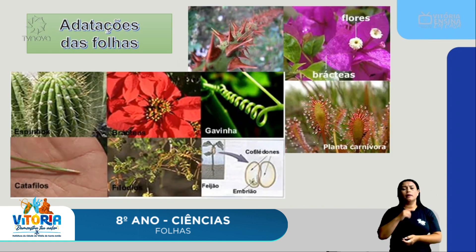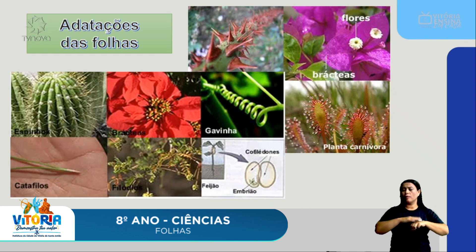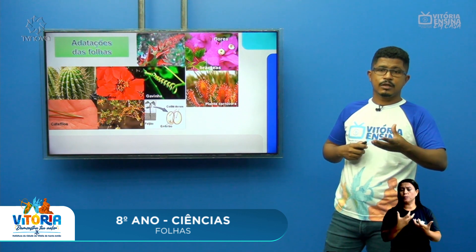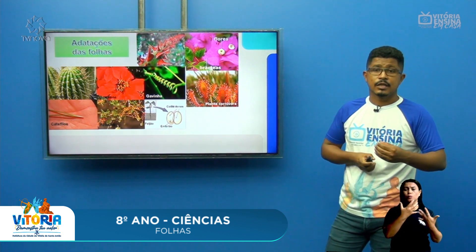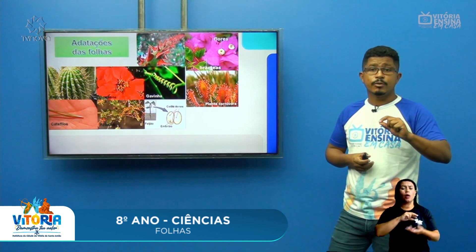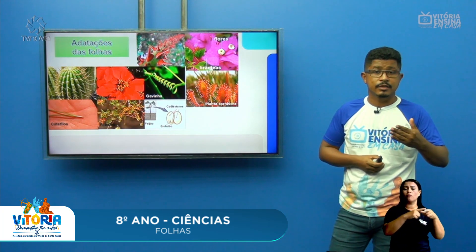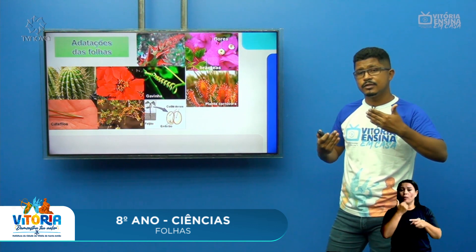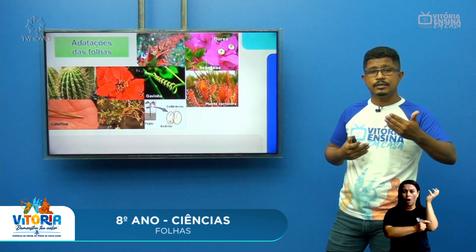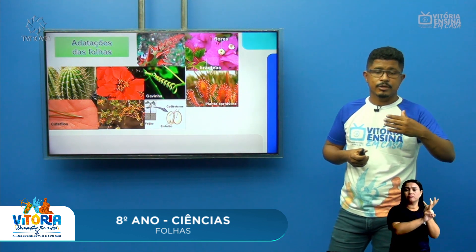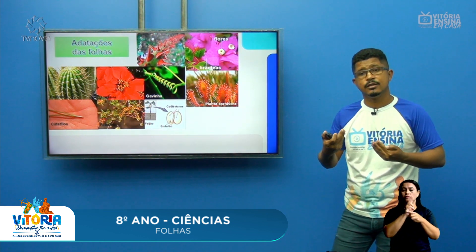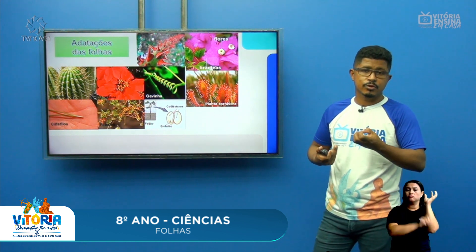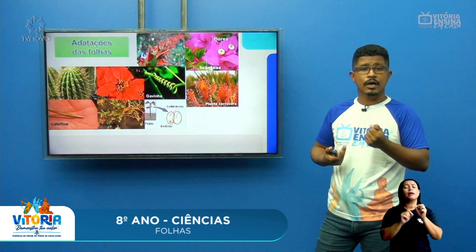As folhas também apresentam diversas adaptações para o ambiente em que convivem. No ambiente seco, como os desertos, o clima semiárido e a caatinga, as plantas possuem adaptações com a produção de espinhos. O espinho protege a planta de predadores, e o seu caule acaba realizando a fotossíntese. Os espinhos são folhas adaptadas nas cactáceas para proteger a planta, enquanto o tronco esponjoso realiza a fotossíntese e acumula bastante água.